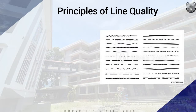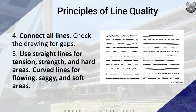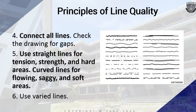Number four: connect all lines, especially to check the drawing for gaps. Number five: use straight lines for tension, strength, and hard areas like knees and elbows. Use curved lines for flowy, saggy, and soft areas. Number six: use varied lines. Once you have mastered a consistent line, try to slightly darken lines on objects closest to the viewer to bring them forward. These are the principles of line quality to consider when drawing backgrounds, objects, and characters.